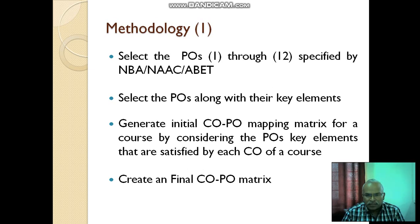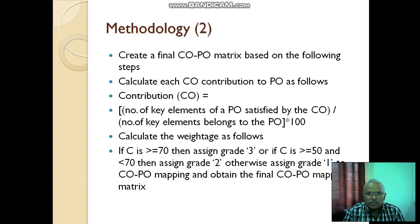Generate initial CO-PO matrix for a course. Whatever course you are taking, it may contain 5 course outcomes. By considering the program outcomes key elements that are satisfied by each course outcome of a course, then create a final CO-PO matrix. How it is, we will see that.